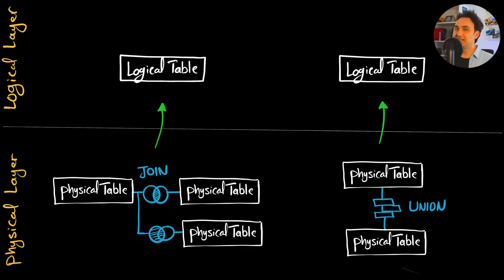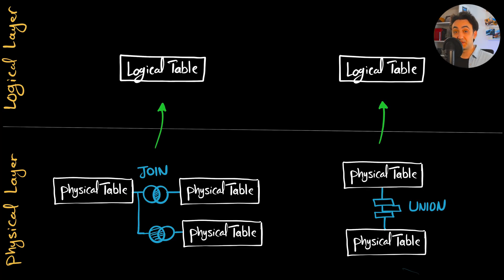This abstraction is especially useful if we have a lot of tables in the physical layer. When building visualizations we don't want to see all those tables, so the logical layer hides all those details. The result of merging tables using join and union in the physical layer is presented in the logical layer as a single flat table, which we call a logical table.